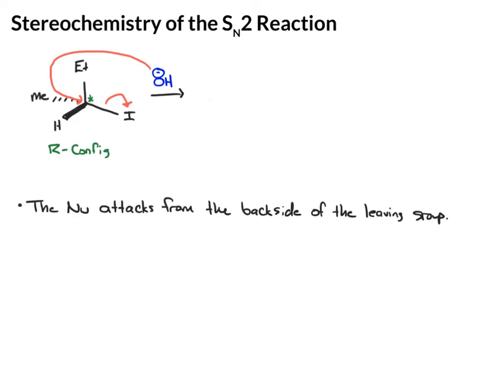Now we're going to do something we don't normally do: draw a transition state structure. Normally we draw starting material, intermediate, and products, but this time I'm drawing the transition state. To denote that it's a transition state instead of an intermediate, I'll put it in brackets with a double dagger symbol.